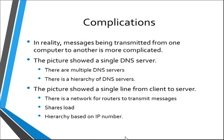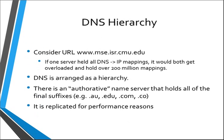That's not a very realistic picture. The picture shows a single DNS server, but actually there are lots of them arranged in a hierarchy. It also shows a single line from client to server, but there's actually a network of routers transmitting messages, which is pretty complicated in terms of how the message actually gets to the server. If you had one server with all the domain names, it would get overloaded and would need over 200 million mappings — the current population of URLs.